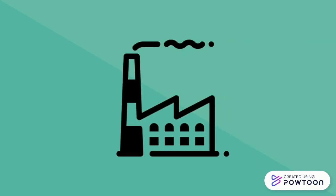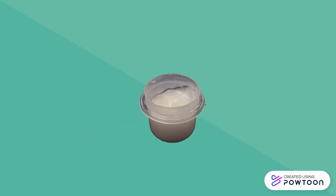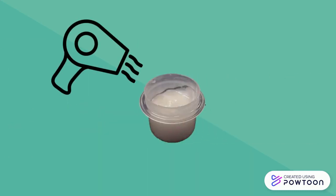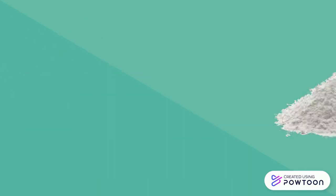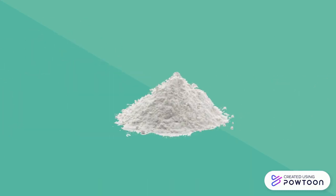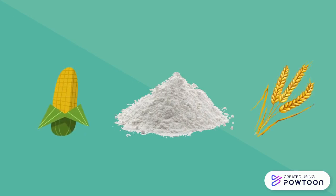Industrially, we can get starch from plants by crushing or grinding plant parts and then mixing them with water. This makes a paste that can be purified and dried to obtain the final starch product. Different plants produce different starches, like corn starch, wheat starch, and potato starch.